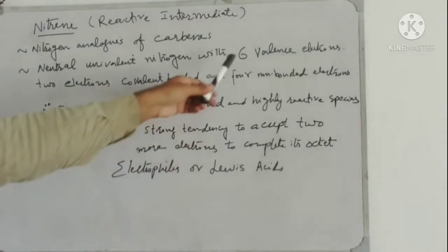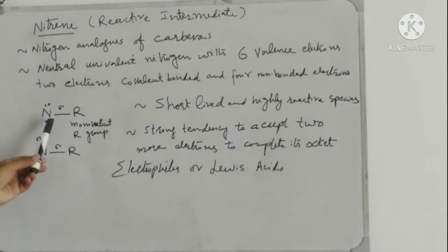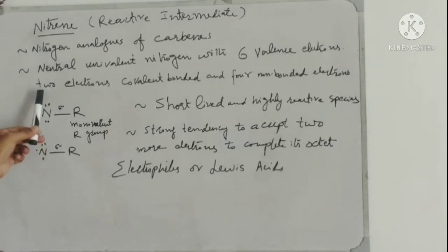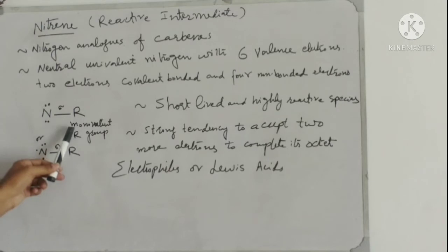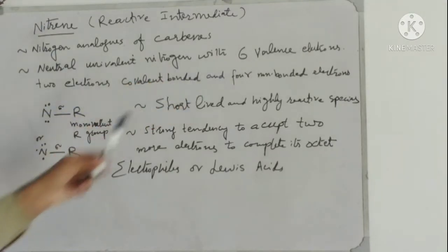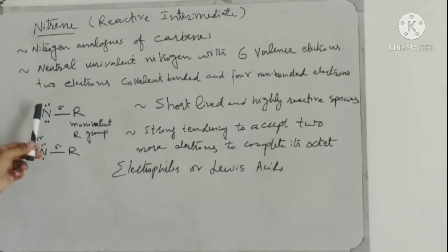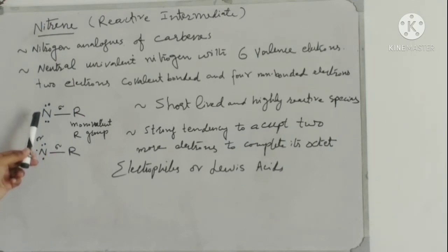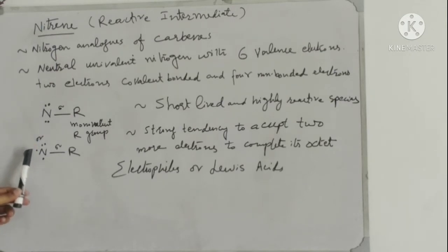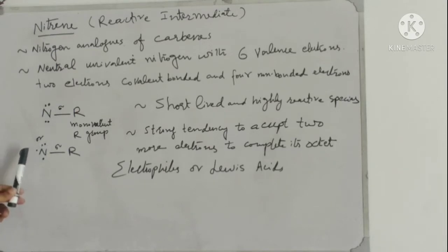How do we distribute these six valence electrons? This is the structure of the nitrene. In this case, two electrons will make the sigma single covalent bond with the monovalent alkyl group, and the four electrons are present as non-bonded electrons on the nitrogen atom. These four electrons could be present in the form of two lone pairs, or as one lone pair and two unpaired electrons on nitrogen atom.